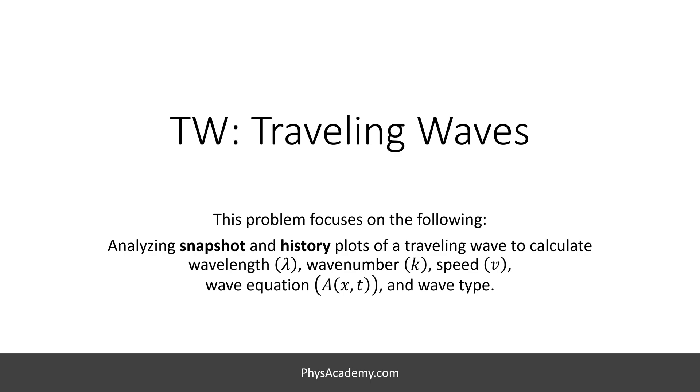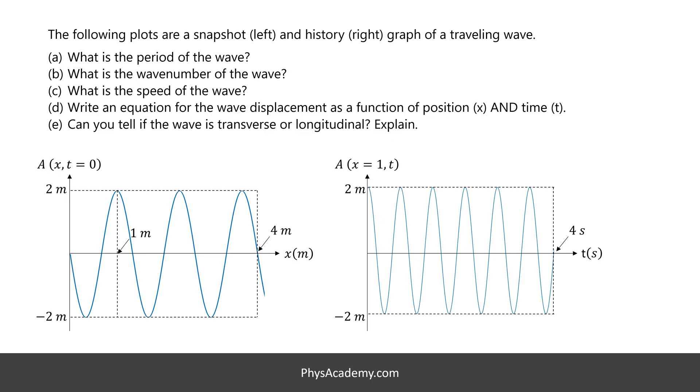Let's read the problem statement and analyze it together. The following plots are a snapshot and history graph of a traveling wave. In part A, what is the period of the wave? In part B, what is the wave number of the wave? In part C, what is the speed of the wave? In part D, write an equation for the wave displacement as a function of position x and time t. In part E, can you tell if the wave is transverse or longitudinal?